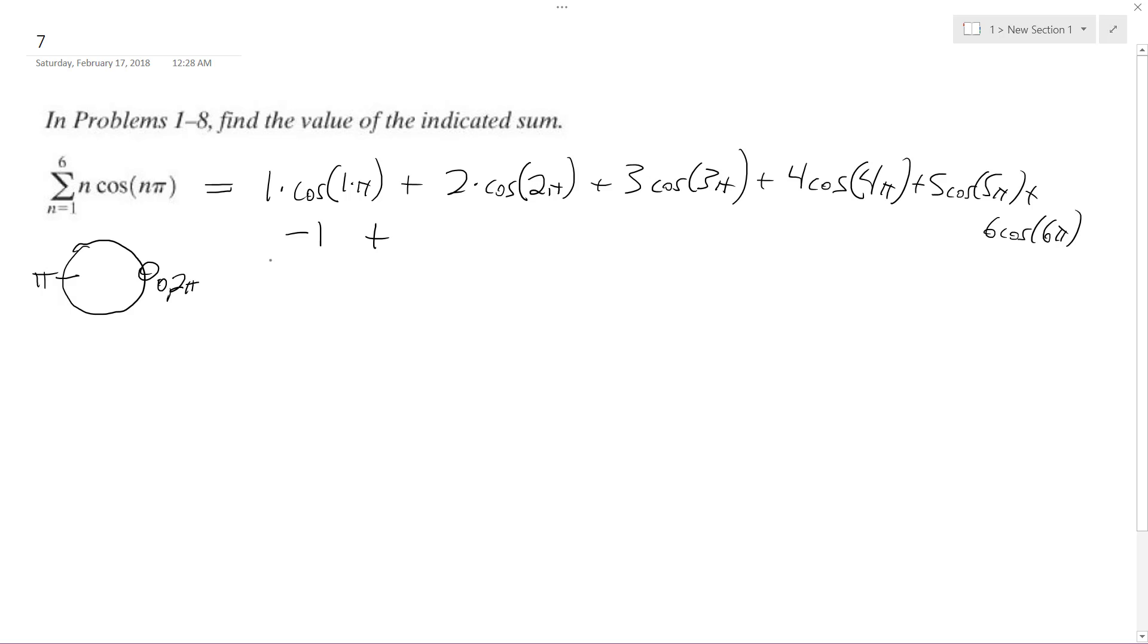Plus 2 times 2, cosine 2 pi. 2 pi is once around, so it's cosine of 0, which is equal to 1, times 2, which is 2, plus 3 pi.